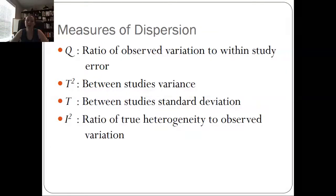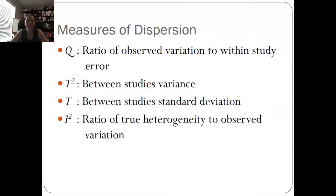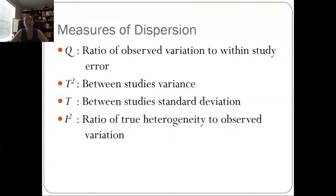Then we have I-squared, which is the ratio of true heterogeneity to observed variation, expressed as a percentage. I-squared is a way for us to look at the percentage of observed variation that we're seeing that represents true variation rather than what's expected due to chance — the percentage of true variation instead of what we'd expect by chance. We're going to talk about each one of these in more detail.